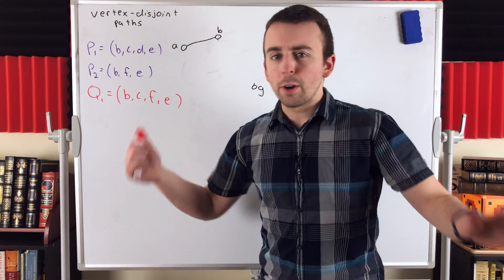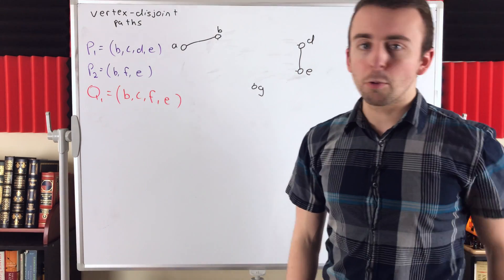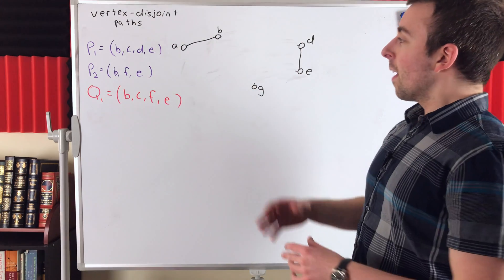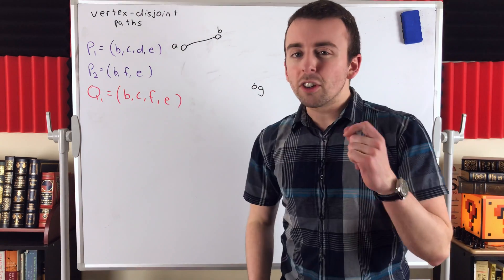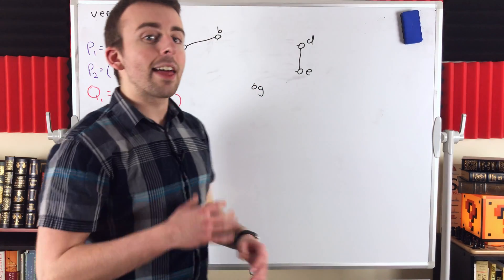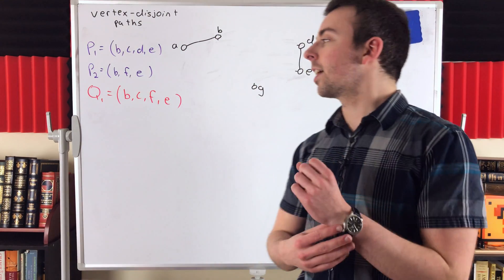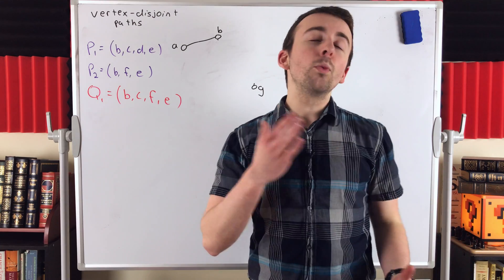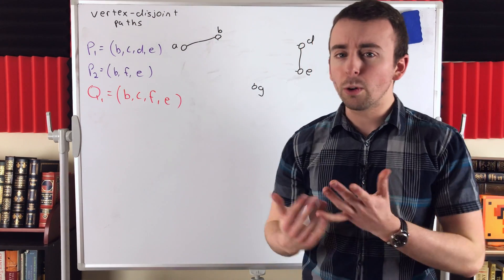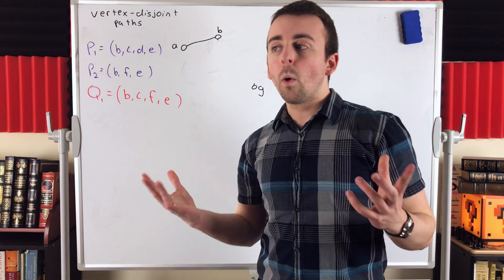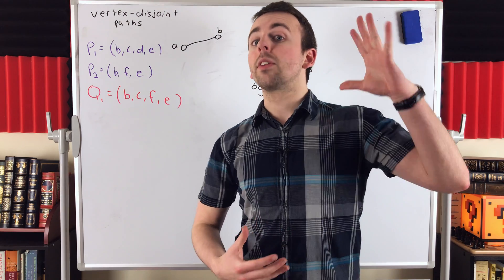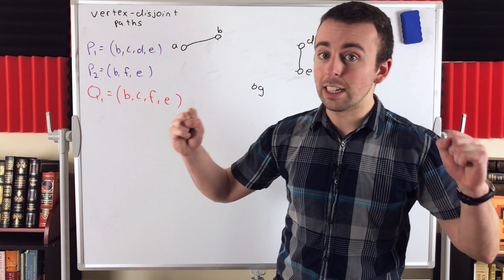Don't be frustrated if you didn't fully catch that, because we'll certainly talk about it more in another lesson coming pretty soon. But for this lesson, I really hope you just got the idea of vertex disjoint paths. We say that two paths are vertex disjoint if they have no vertices in common. But sometimes we might consider disjoint paths that only have starting vertices in common, or only have ending vertices in common, or are internally disjoint — having no vertices in common except for the starting and ending vertices, which are the same.